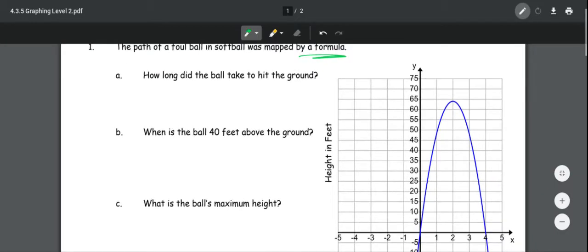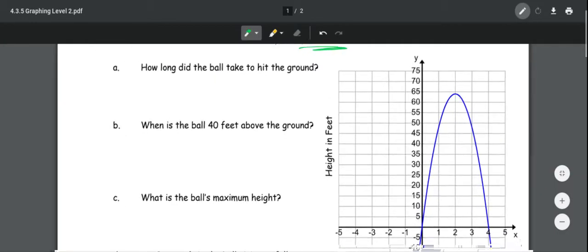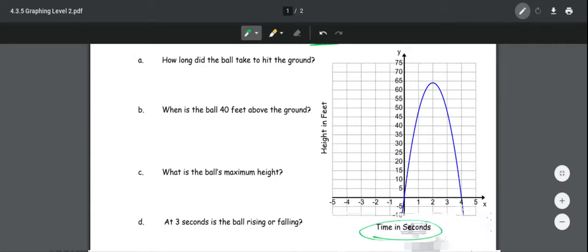So we had a formula that gave us this path. How long did the ball take to hit the ground? First, we need to look at your x and y axis. So it tells you the units of those. It says how long did the ball take to hit the ground? When it says how long, they're asking for seconds, which is your x value. Now hitting the ground, meaning the height, would be zero.